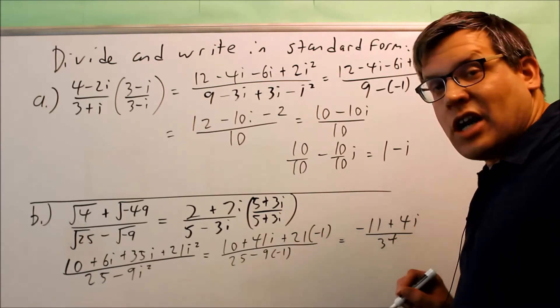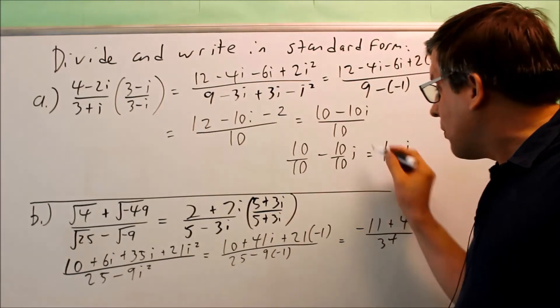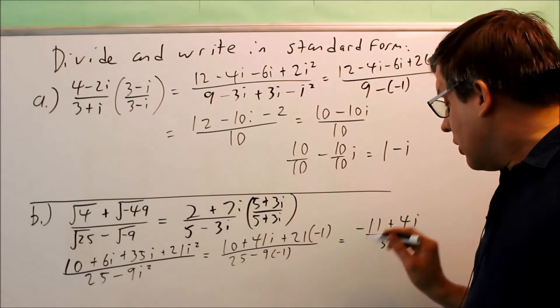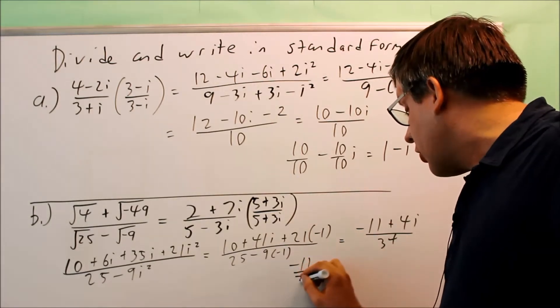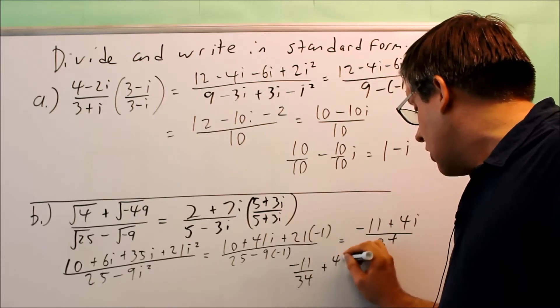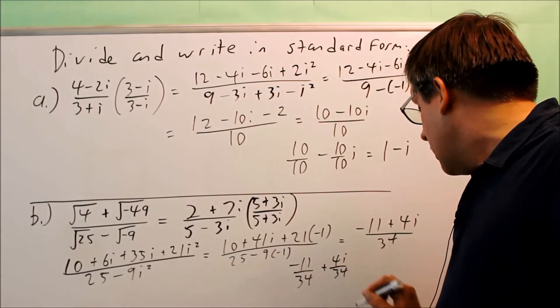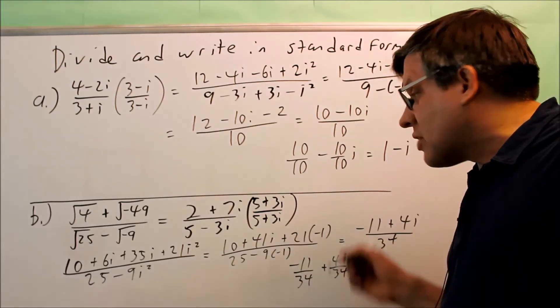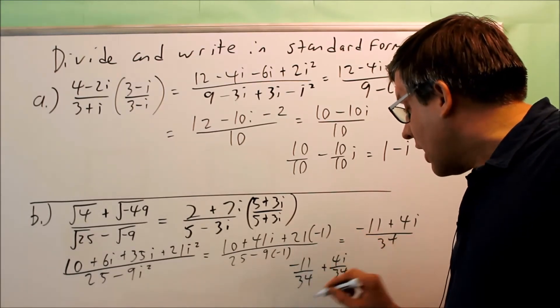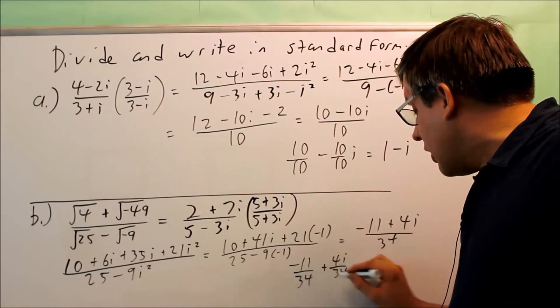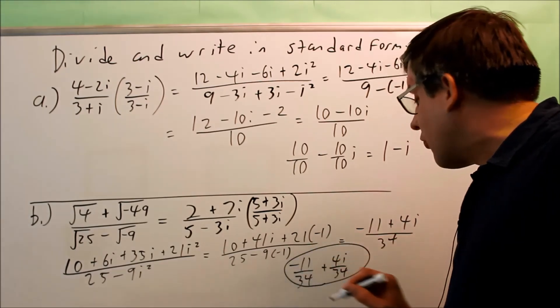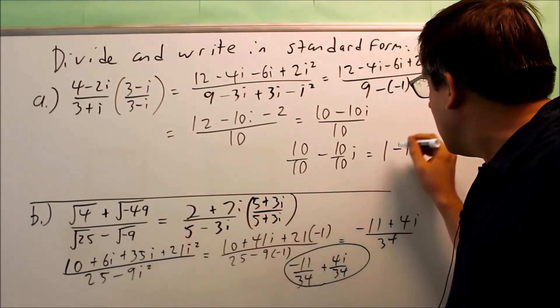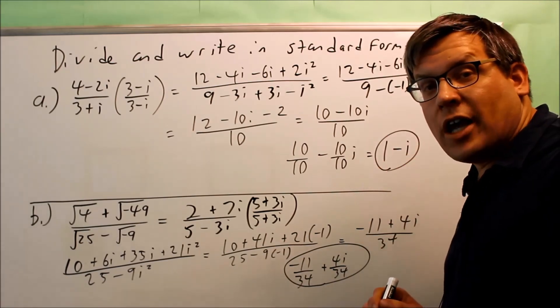that's not the proper standard form. You want to separate it like we did the one over here. You need to get two separate fractions for that. So you get negative 11 over 34 plus 41i over 34. Now these do not reduce. And that's fine if they don't reduce. We have this separate a term here. And here's the b term here that has the i connected to it. So this would be the final answer for part b. And again, here's our answer for part a. Thank you.